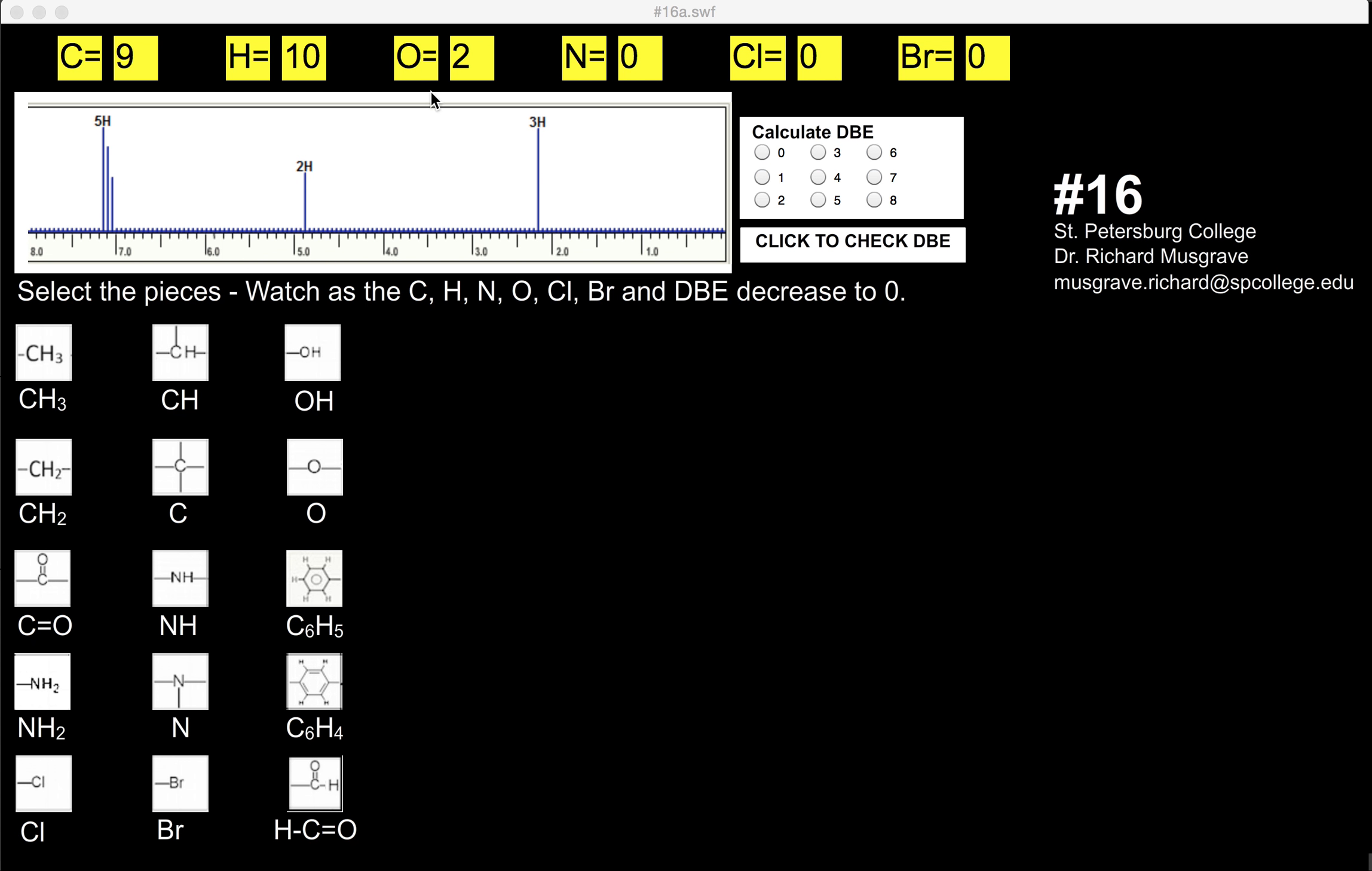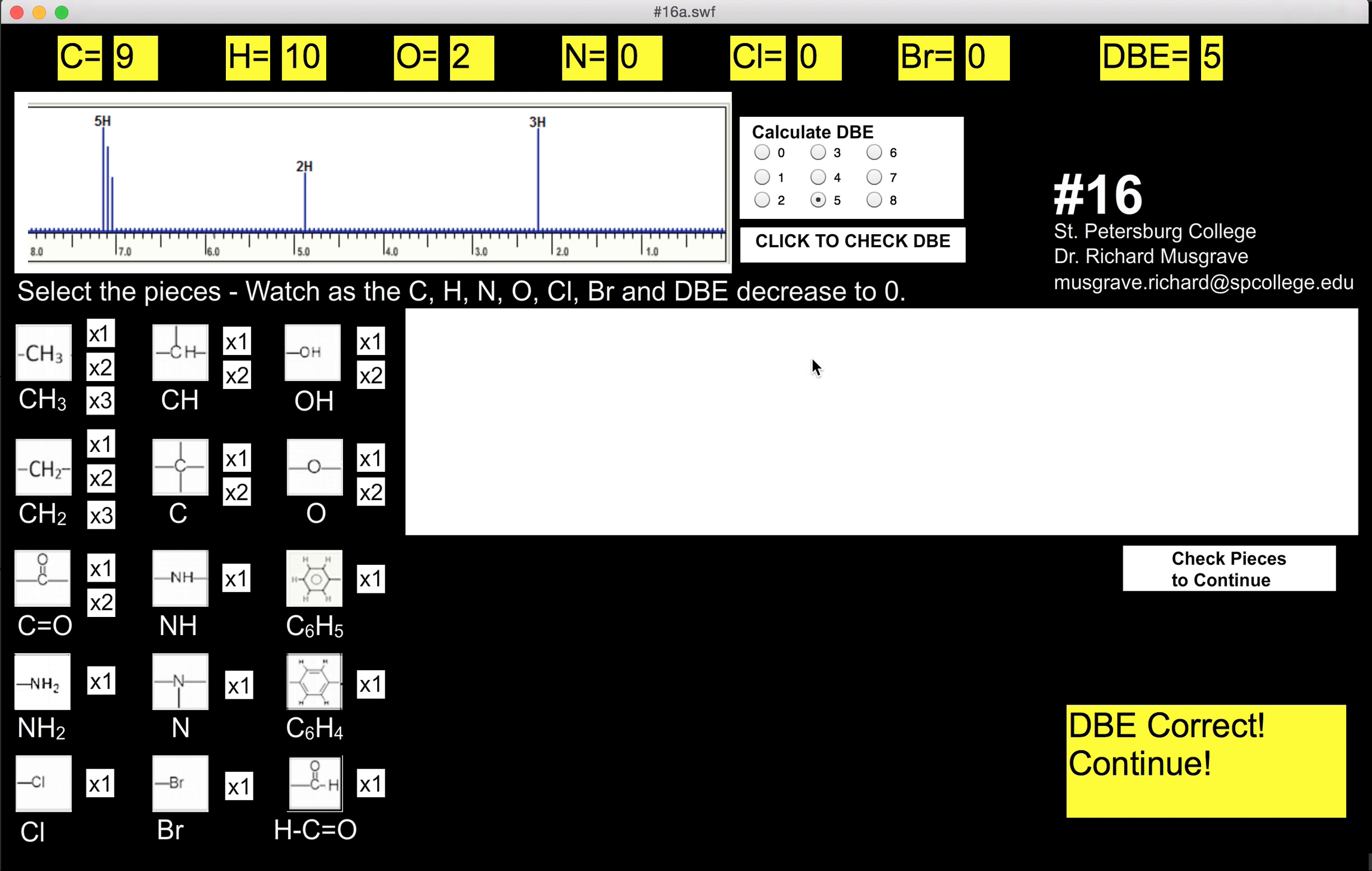This one is C9H10O2. It has five double bond equivalents. We have a 5H in the aromatic region between 7 and 8. It's going to be C6H5.